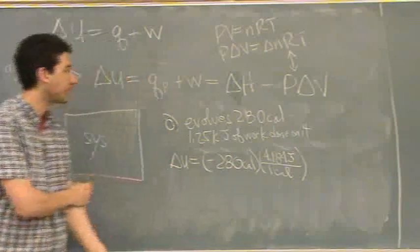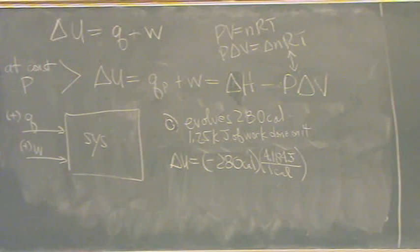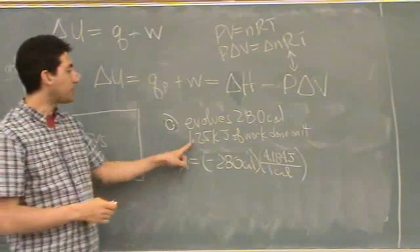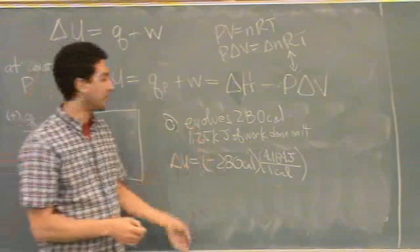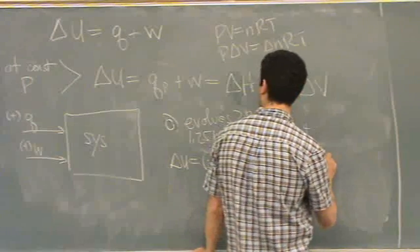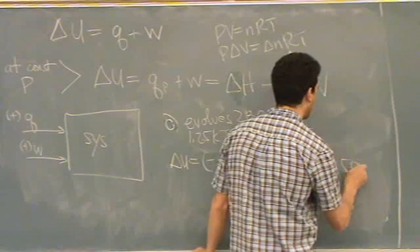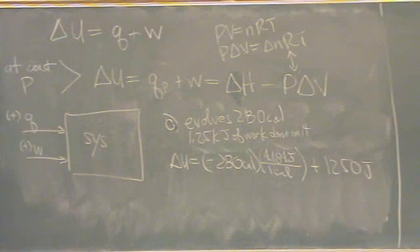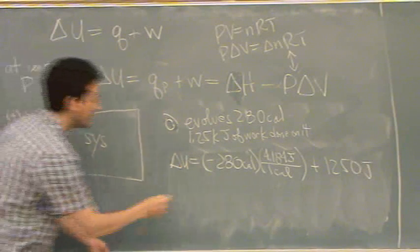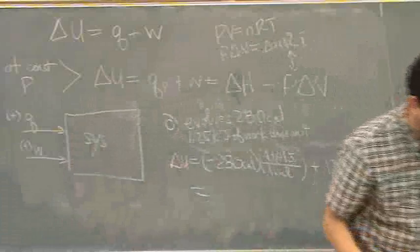How about the work term? It's positive because work is done on it. It's 1.25 kilojoules. We've got to change that to joules, so plus 1250 joules, so just multiply by 1000. And it's positive because work is done on it, and so let's see what answer they got.